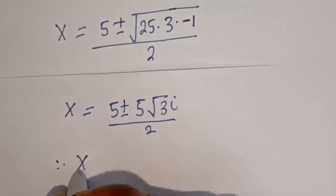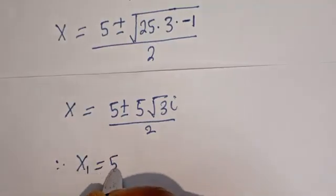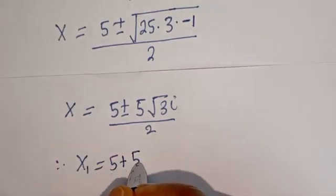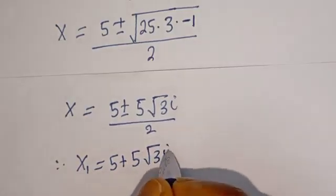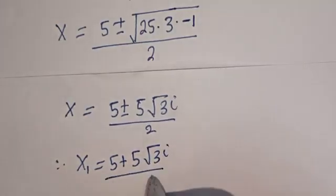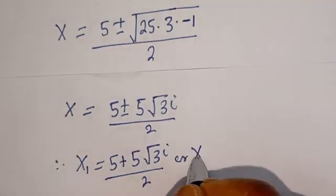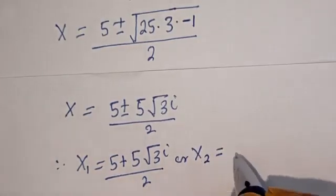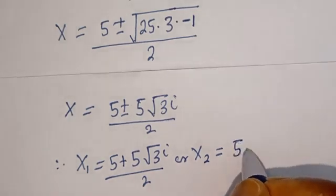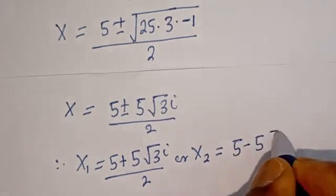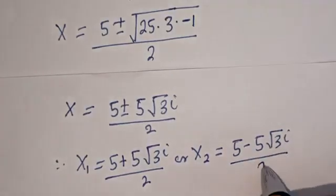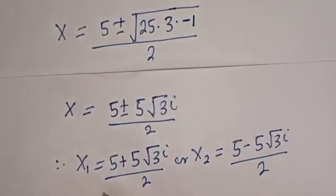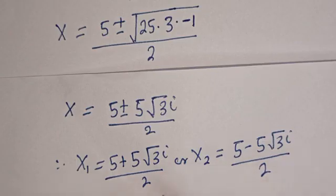Therefore x₁ is equal to (5 plus 5 root 3 i) divided by 2, or x₂ is equal to (5 minus 5 root 3 i) divided by 2. We've gotten the values of x₁ and x₂. We can now solve for y₁ and y₂ using equation 3.